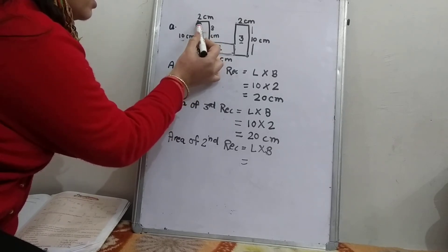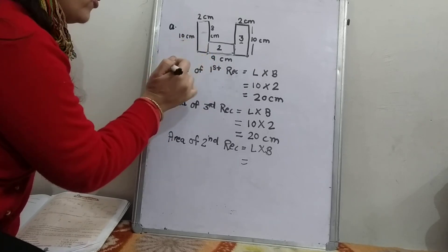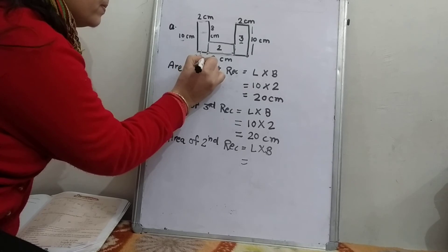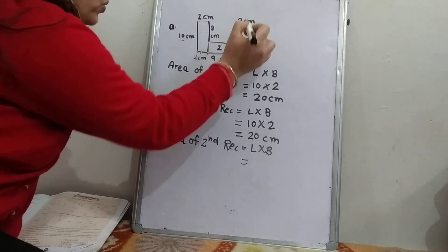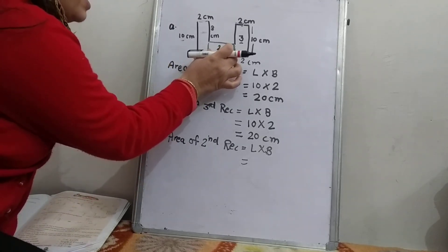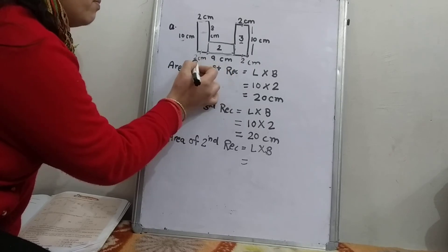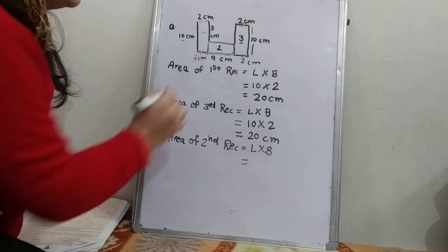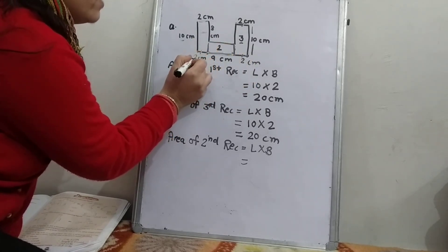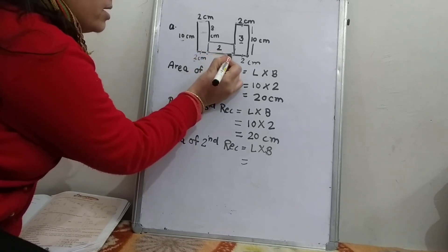Here it is 2 cm. In a rectangle, opposite sides are equal, so if this is 2, this will also be 2, and if this is 2, it will also be 2. As we need this part only, we do 9 minus 2 minus 2. We subtract this length and this length. So 9 minus 2 is 7, and 7 minus 2 is 5. So the length from here to here is 5 cm.